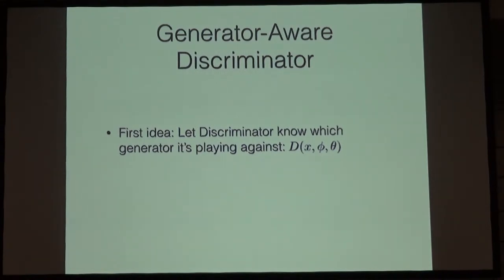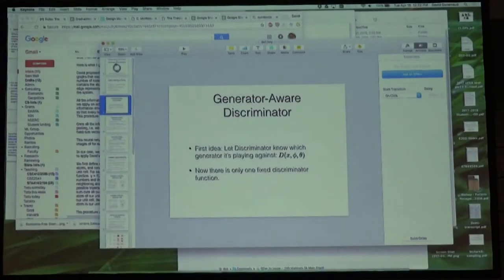Here is this idea that me and the student were saying: let's let the discriminator know which generator it's playing against. Now we'll change the signature of our discriminator function to not just take in the current image and its own parameters, but also to get to see all the parameters of whatever generative process was producing the particular samples that it's trying to discriminate with respect to.